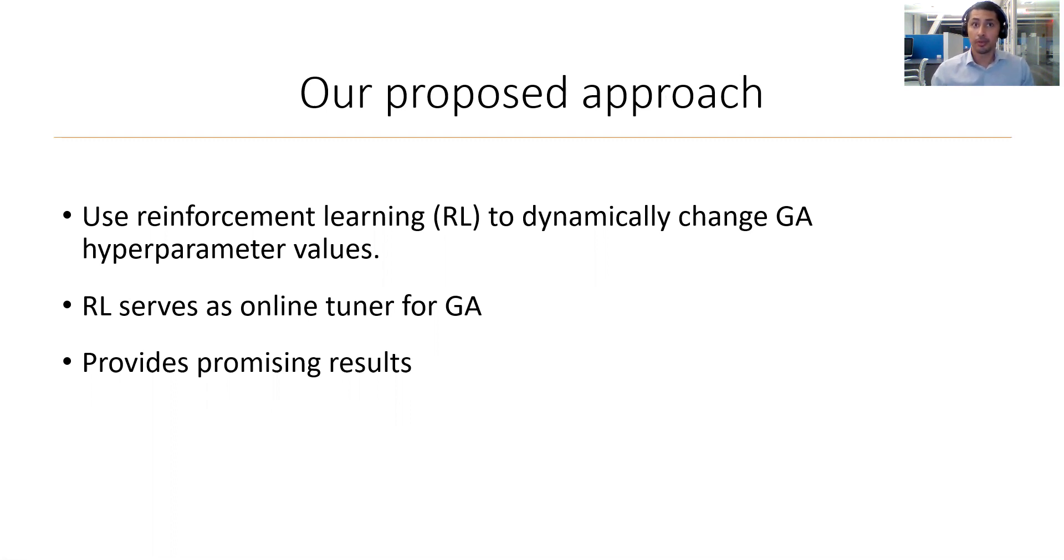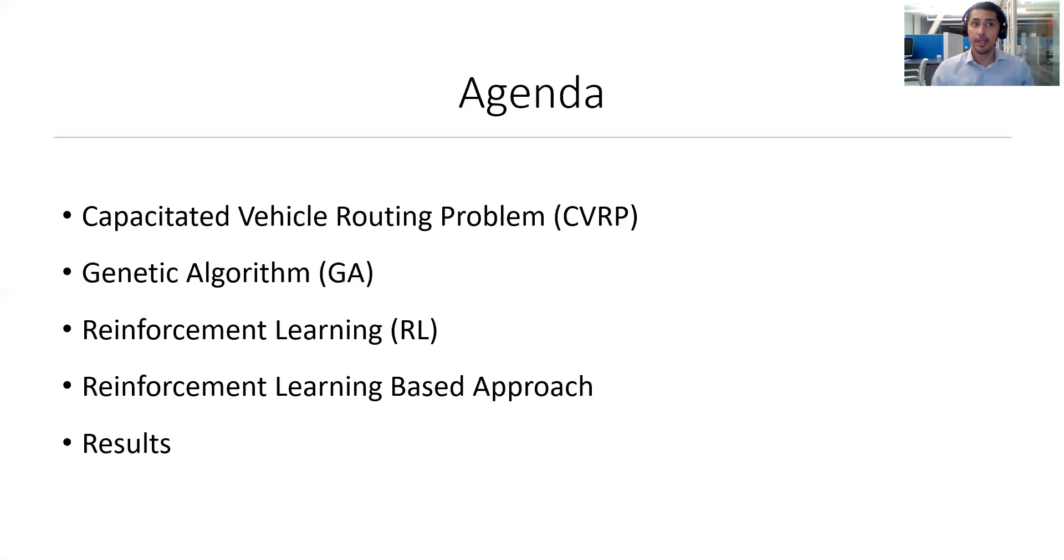Some more quickly, we would propose a reinforcement learning approach to adaptively set parameters for genetic algorithms solving capacitated vehicle routing problems. To explain this work, I will introduce three important components of this work and how they were combined within our approach and then finish with our results.